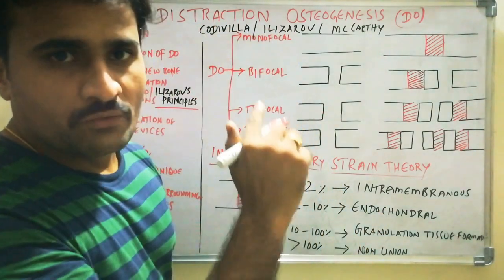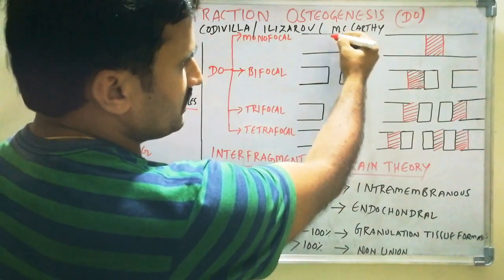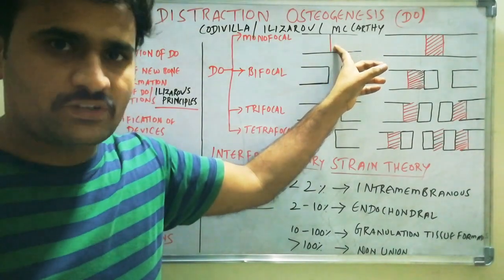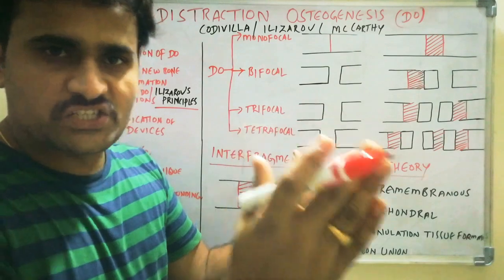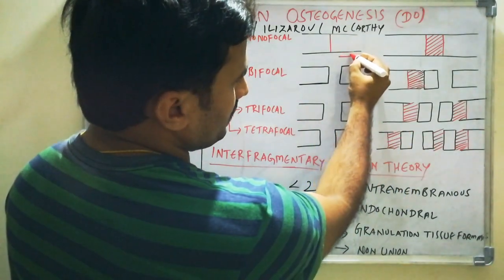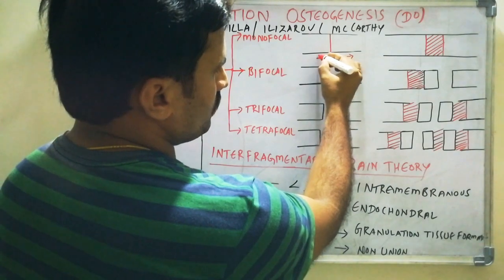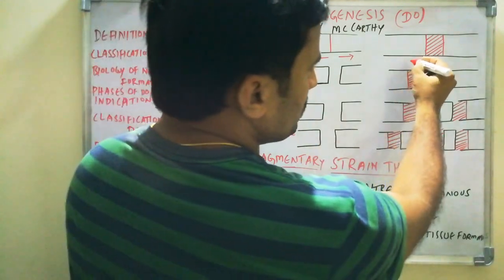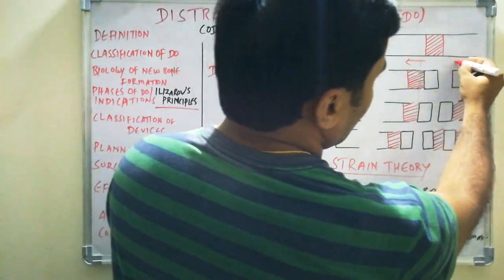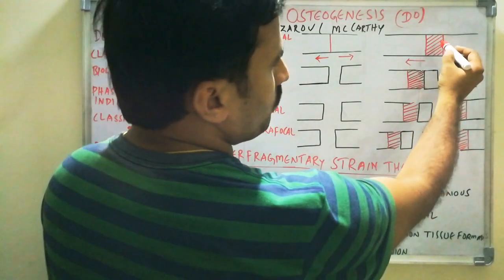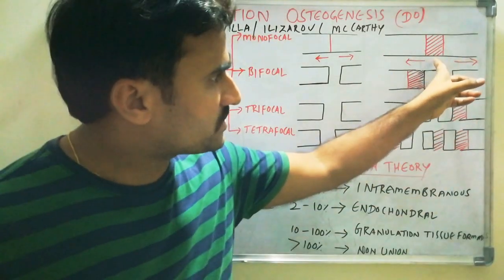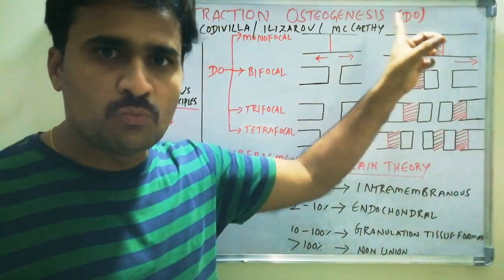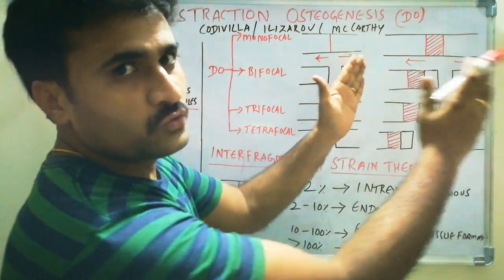In monofocal, we prepare an osteotomy line in the bone. After that, we apply gradual distraction — the fragments are moved opposite to each other. When there is distraction of the fragments opposite to each other, there will be new bone formation in the distracted area, shown here as the red line area. That is the new bone formed due to distraction of two fragments. This is monofocal.